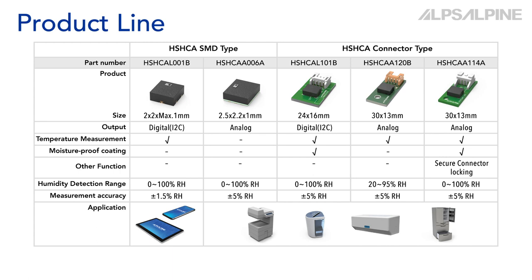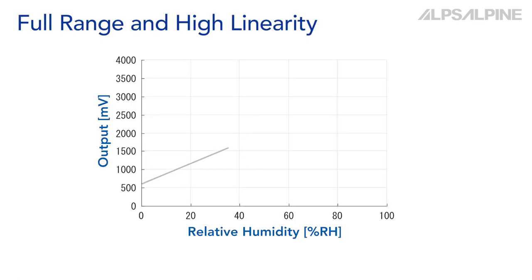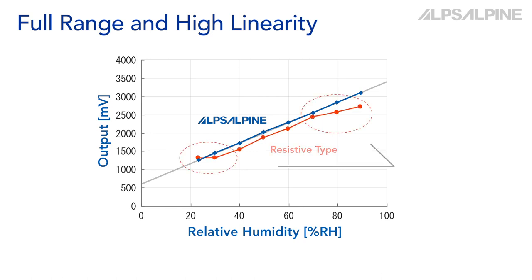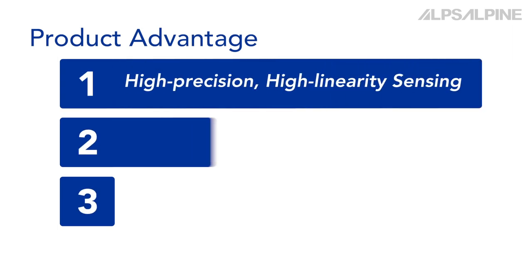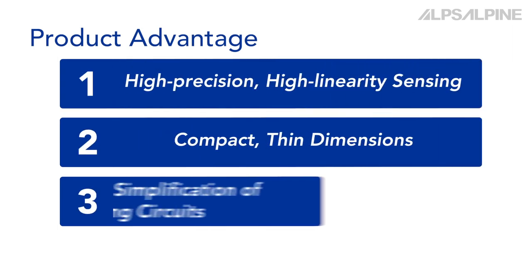AlpsAlpine has a variety of humidity sensors for both SMD and connector type requirements. Our sensors have both digital and analog output with temperature measurement capabilities. Compared to other types of humidity sensors, AlpsAlpine's humidity sensors deliver high linearity of output. Product advantages include high precision, high linearity sensing, compact thin dimensions, and compatibility with simplification of surrounding circuits.